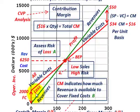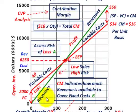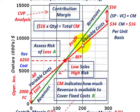Up until you hit that break-even point, you'd be operating at a loss; after that, you'd be operating at a profit. You have to sell at least as many units as your break-even point before you start generating any profit — any sales below that would be generating a loss. We're really trying to assess the risk of a loss by not meeting our break-even point.